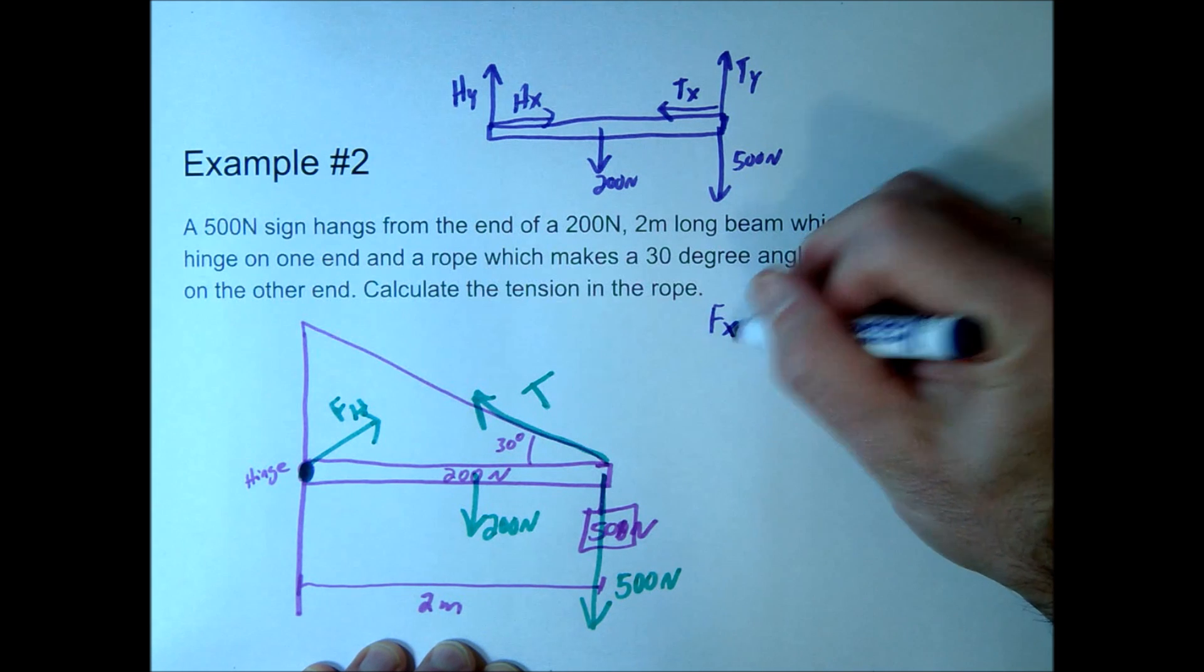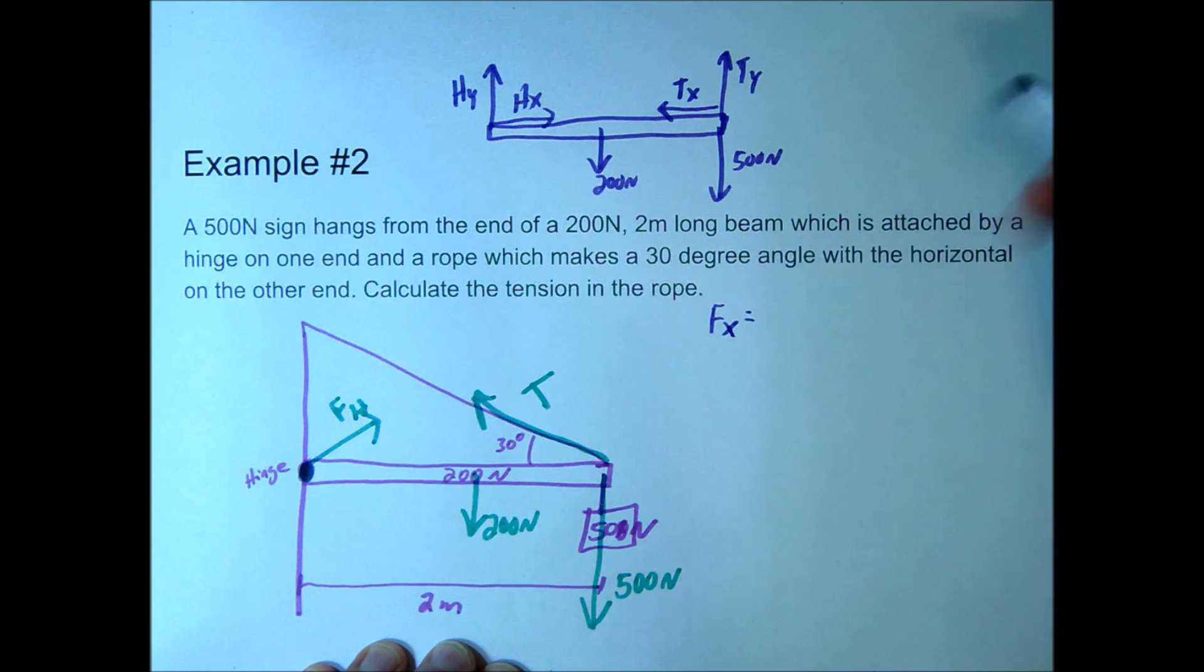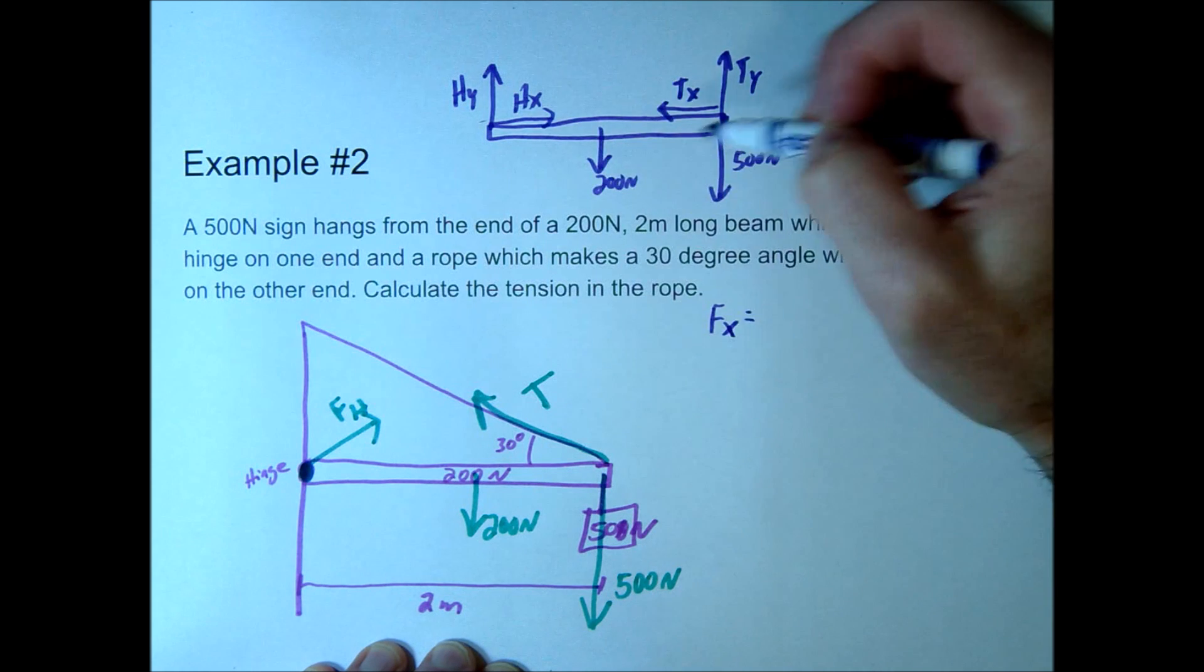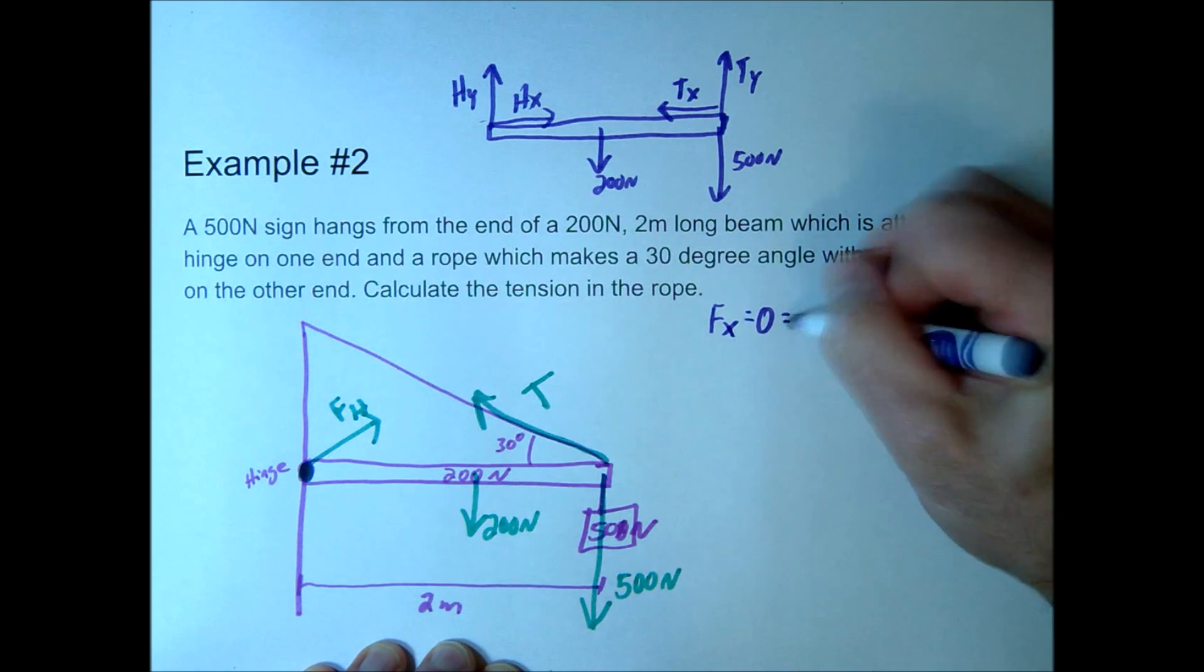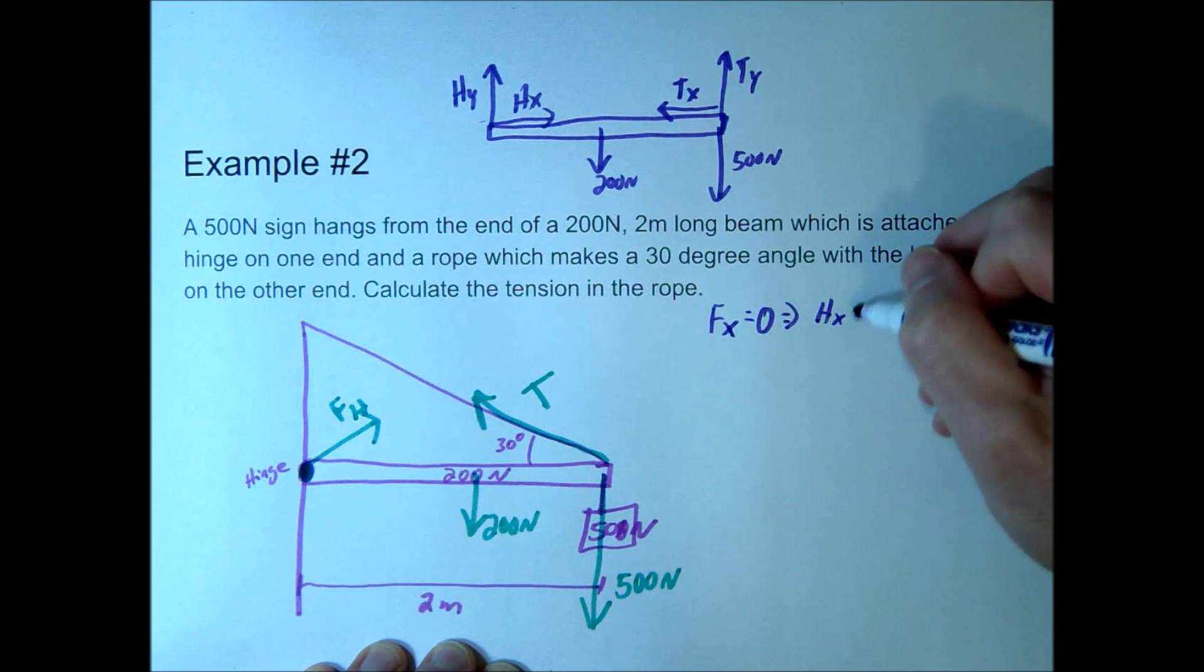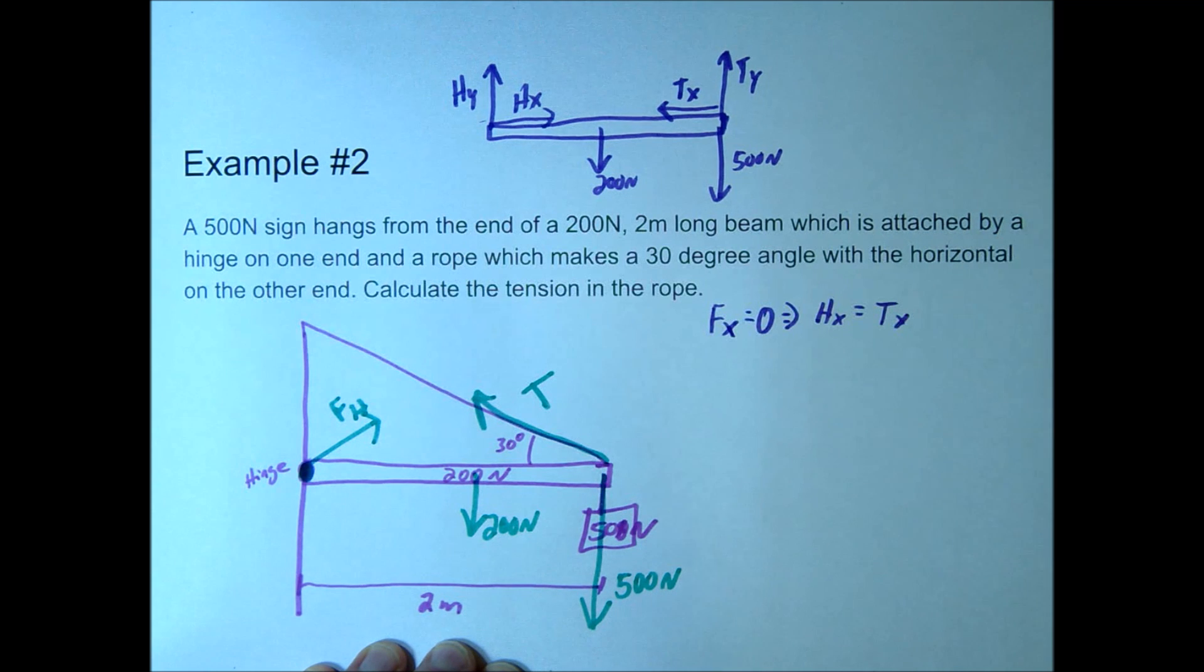So in the x direction, notice we just have these two, right? hx going this way and tx going this way, and since we know that has to equal 0, that basically tells us that hx has to equal tx. Those have to be in a nice equilibrium state.